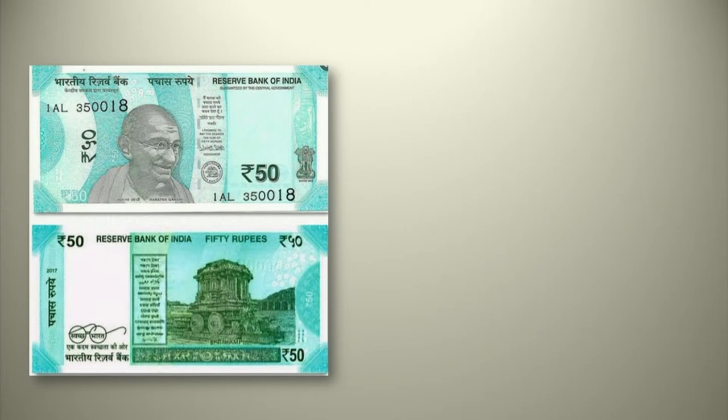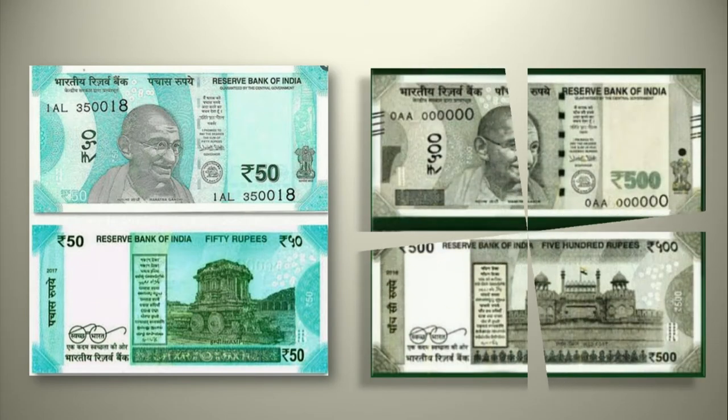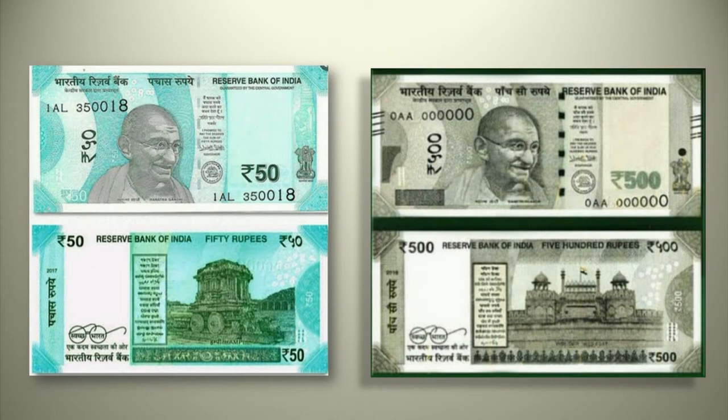Every note has a picture on the back. One side the amount is written, and on the other side there is a picture of a monument. Monuments are historical places. On the 500 rupee note you can see there is a monument — the Red Fort.